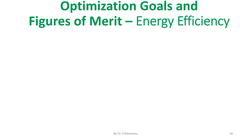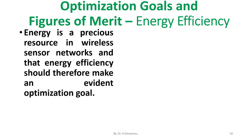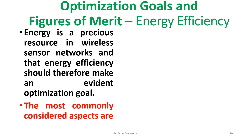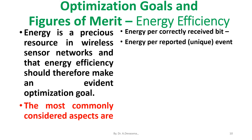Now we are going to discuss energy efficiency. Energy is a precious resource in wireless sensor networks, and energy efficiency should therefore be an evident optimization goal. The most commonly considered aspects are: energy per correctly received bit, energy per reported event, and delay or energy trade-offs.